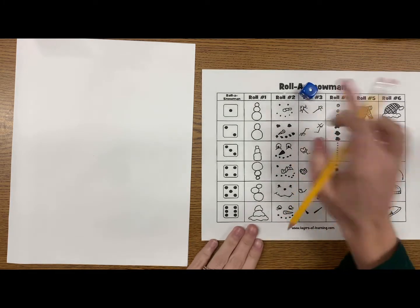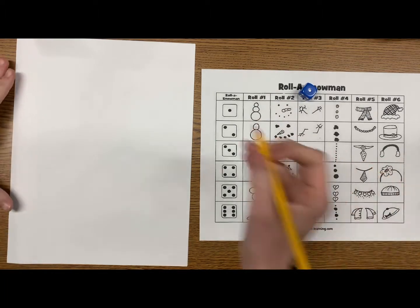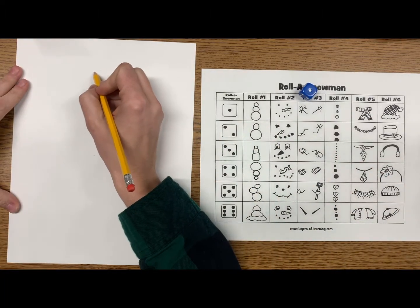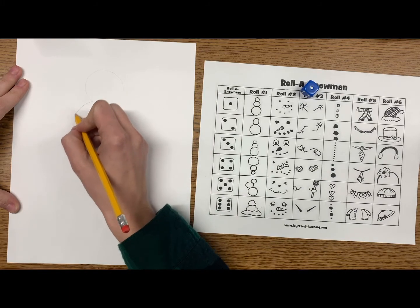Roll number one is our snowman's body. So I'm going to roll my dice to see what snowman body I am going to draw for my snowman. It looks like I got number one, which has the three circles. So I'm going to go ahead and draw that.